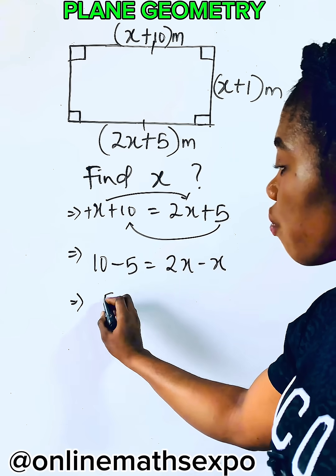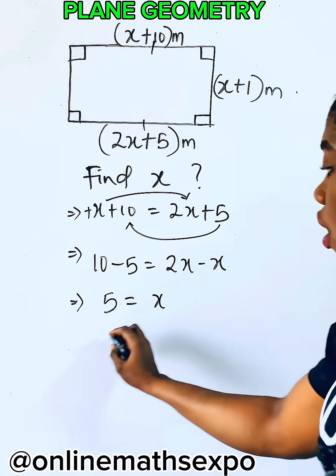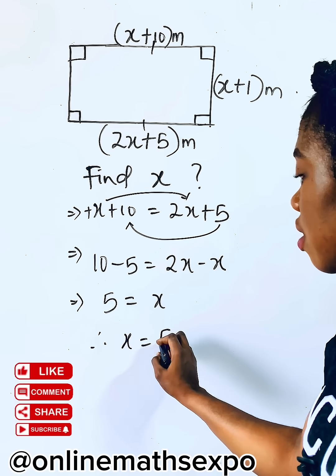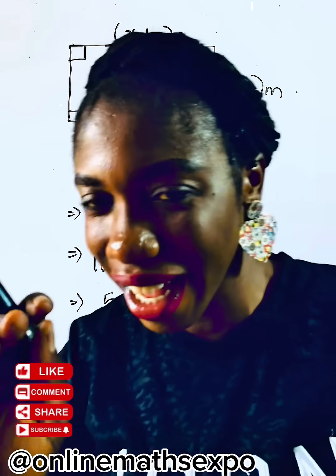Subtract this, it gives you 5 is equal to, this will give us x. So it means that our x is equal to 5. I hope it helps. Bye-bye.